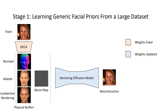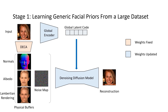Next, we concatenate these physical buffers with a noise map. The concatenated input aligns well with the input and output images. We change the denoising diffusion model to reconstruct the input image. Because these physical buffers are not able to provide all information including facial details or the image background, we need another condition to account for global information. Therefore, we add a global encoder to encode the input image to a global latent code. We then feed the latent code to the denoising diffusion model as another condition. The physical buffers tend to contain only local information since they are pixel-aligned with the input image, while the global latent code tends to cover more global information such as the background and hairstyle.